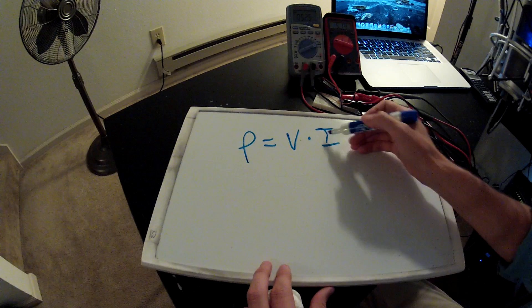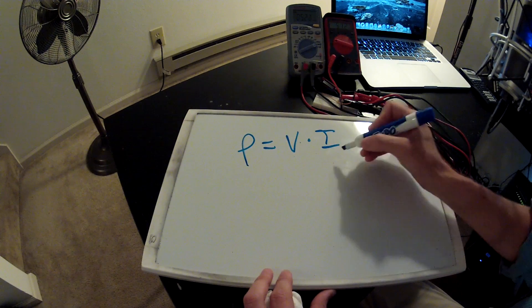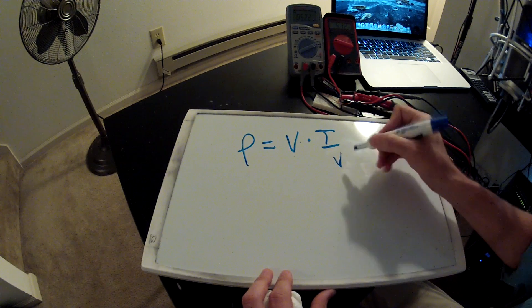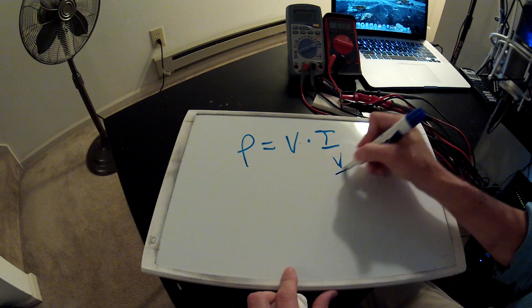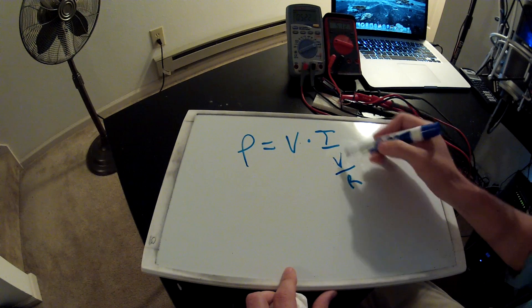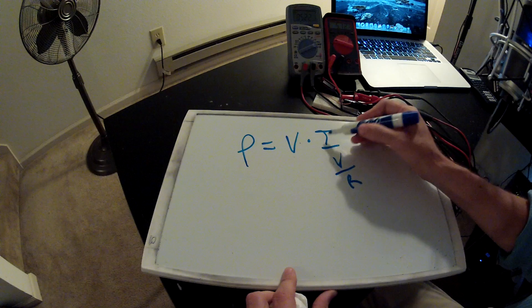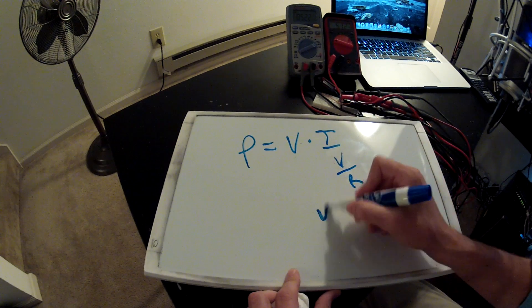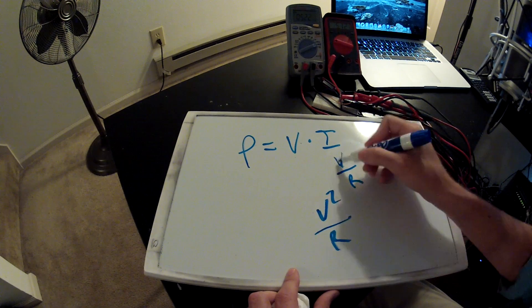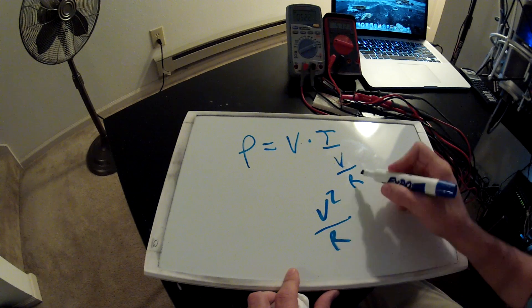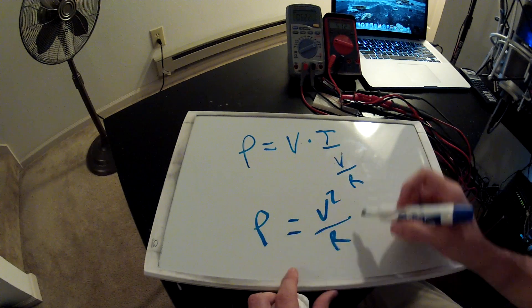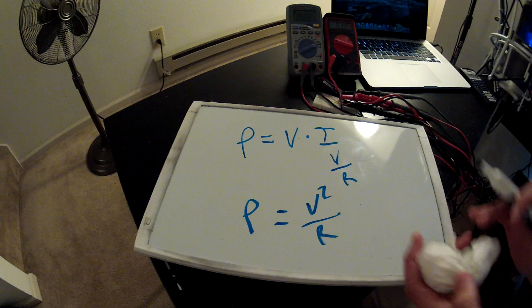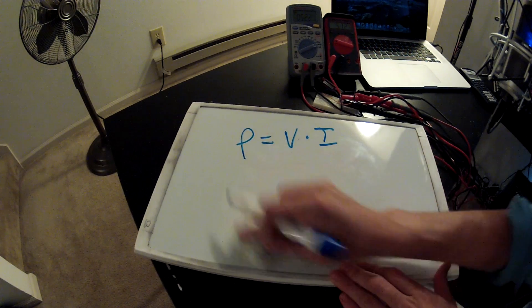is that I here is also equal, from Ohm's law, to V over R. So if you substitute that in for I, you get V squared over R, right? V times V, so V squared over R equals P. It just saves you an extra step. All right,